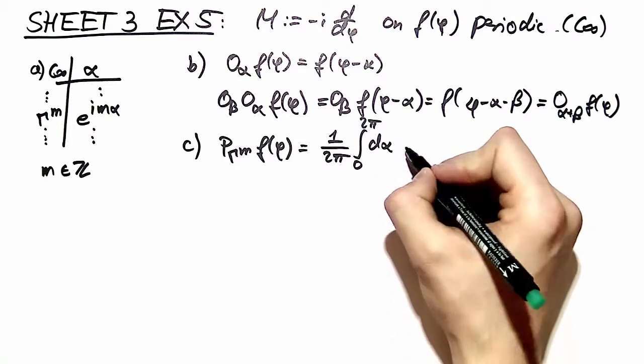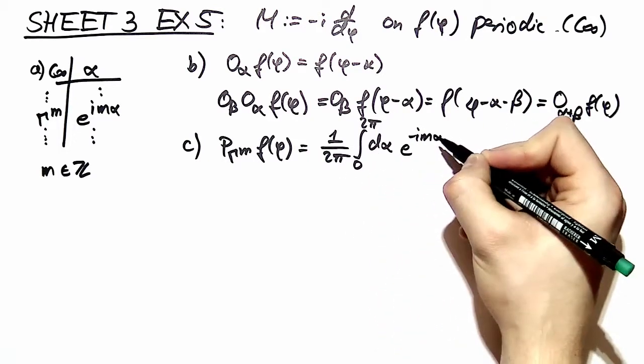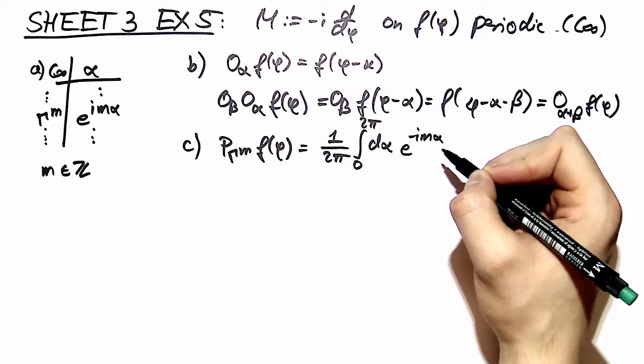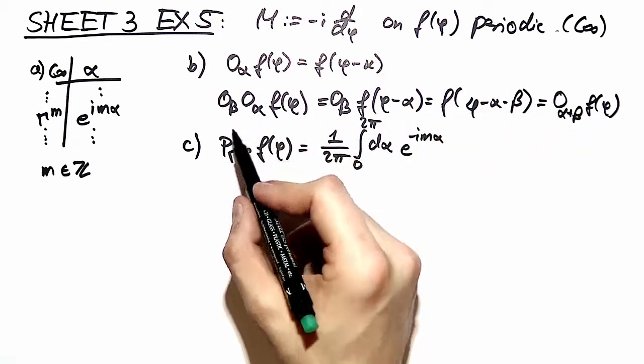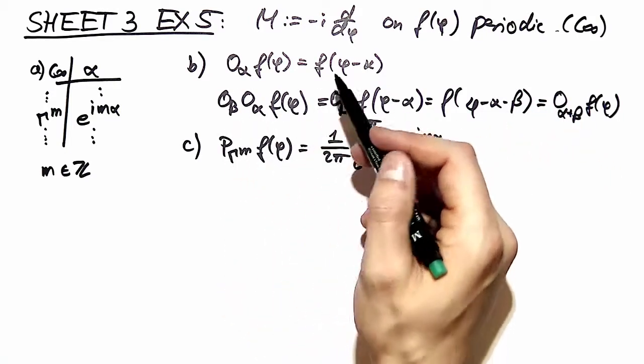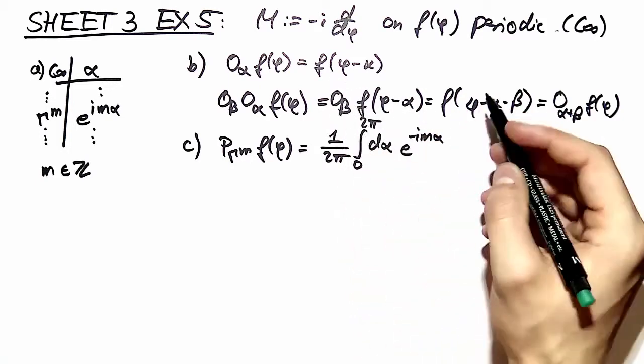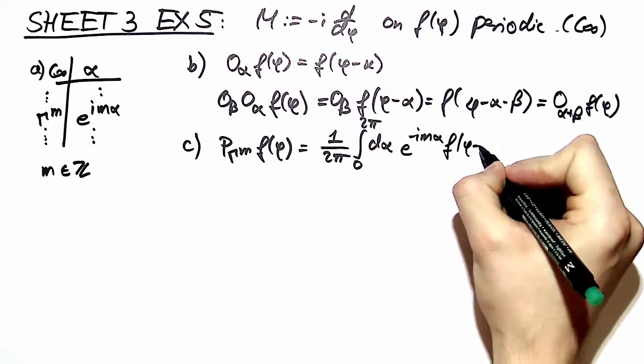Then we take the complex conjugate of our character. This is e to the minus im alpha. And then we act with a rotation o alpha on our trial function f of phi. So we end up with f of phi minus alpha.